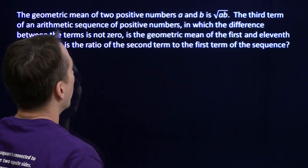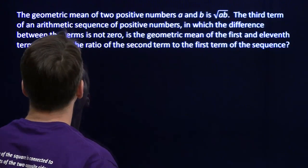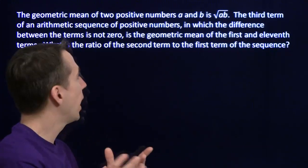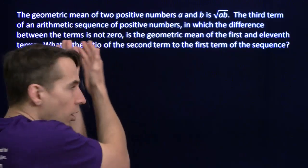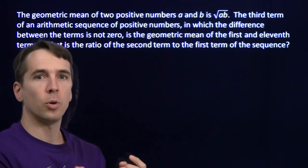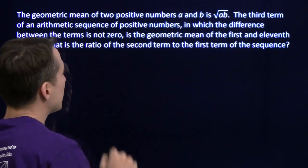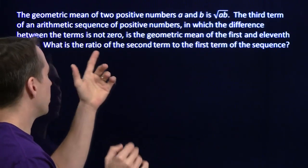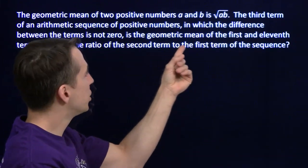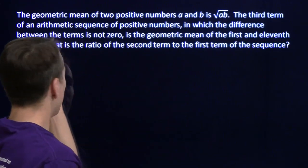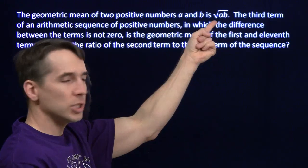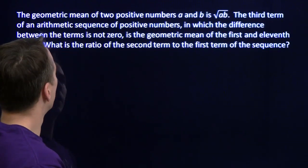Oh boy. A whole lot of words. Okay. Arithmetic sequence problem. We know how to turn arithmetic sequences, all these words into equations, into expressions. We have an arithmetic sequence. The difference between the terms is not zero. Okay, D isn't zero. The geometric mean of the first and eleventh terms. Well, here's what a geometric mean is. You take the two numbers, you multiply them, and take the square root.